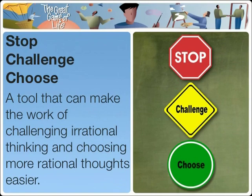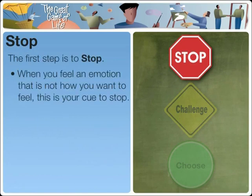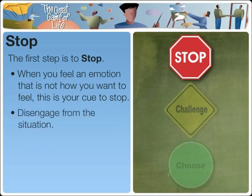Let's walk through how to use it, and then we'll go through an example. The first step is Stop. When you feel an emotion that is not how you want to feel — for example, anger, fear, frustration, or sadness — that is your cue to stop. This is the common sense approach of counting to 10 before getting upset. If you can, disengage from the situation. Walk away. Give yourself time and space to regain your control. Now, the problem is that often we can't just walk away. We can't hang up on a client or walk out of a meeting. In those situations, we need to stop and disengage mentally.